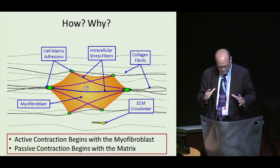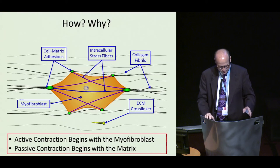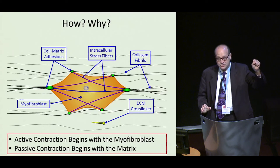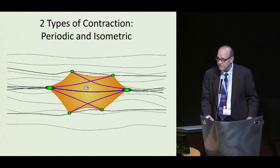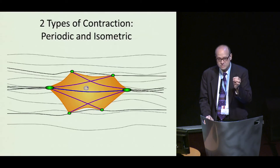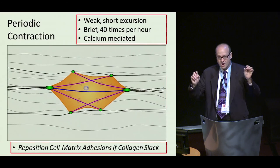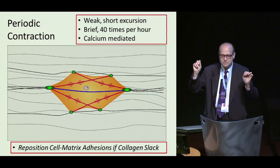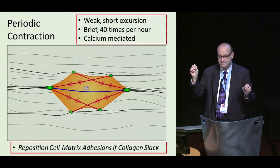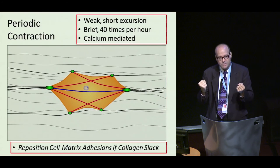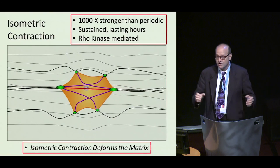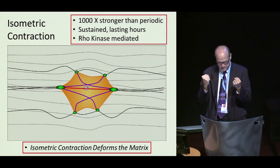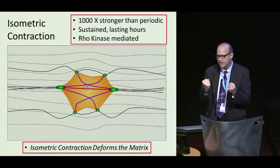How could this be? I'm a surgeon, so it's got to be very simple. A myofibroblast has focal adhesions that connect extracellular collagen strands to intracellular contractile stress fibrils, with enzymes floating in the matrix. There are two types of myofibroblast contracture: periodic and isometric. Periodic contractions are short, brief, and weak — they can pull collagen strands only if the collagen has slack, and are regulated by calcium biology. Isometric contractions are a thousand times stronger, able to deform the matrix, and use the Rho kinase pathway.